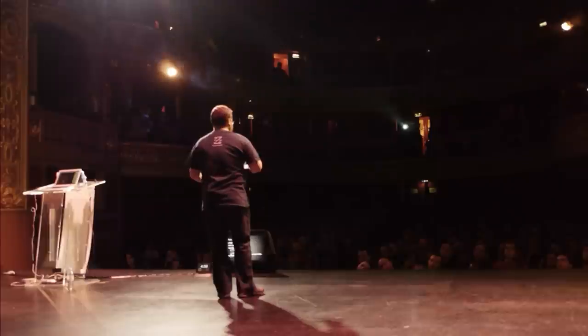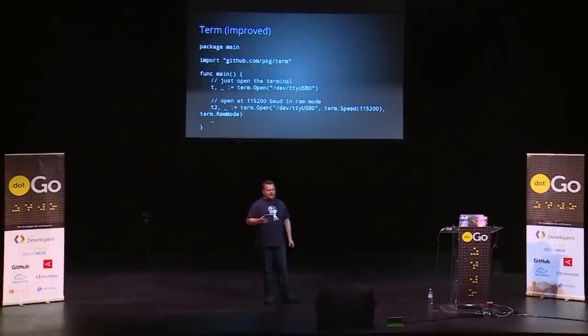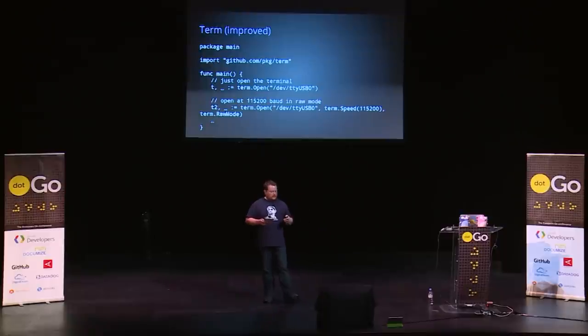By converting the open function to use a variadic parameter of function values, we get a much cleaner API. The default case still just takes one argument — just the name of the device. And for more complicated cases, configuration functions are defined in the term package and passed into the open function, applied in the order in which they are specified in the source. This is the same pattern as we saw in the previous example. The only difference is that the functions, rather than being anonymous, are public functions — but in all other respects they operate exactly the same.